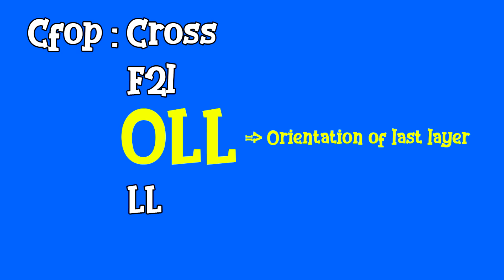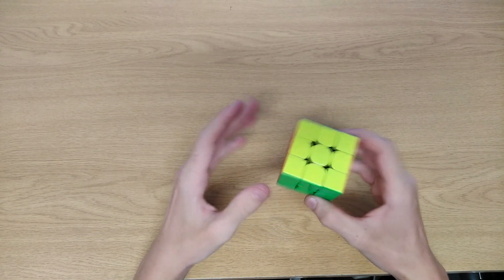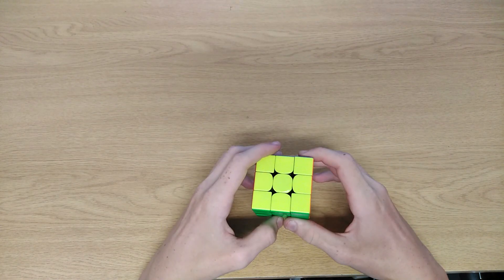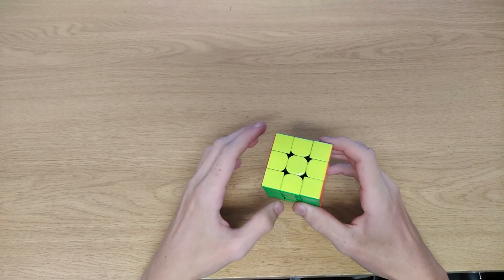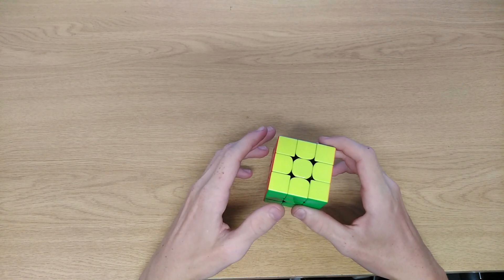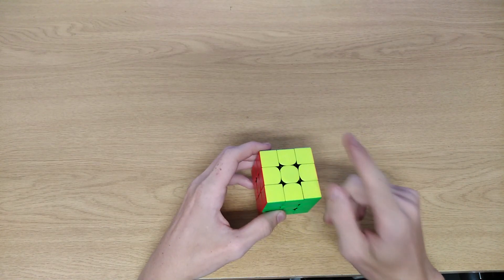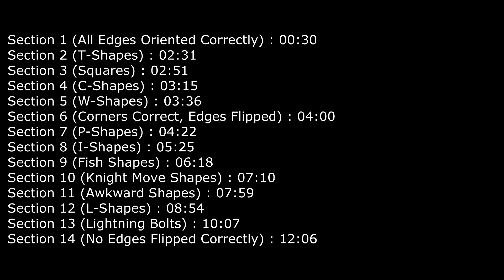OLL is the third step in the CFOP method, which stands for Orientation of the Last Layer. In basic terms, this just means that you have to make the top side the same color. There are a total of 57 algorithms in OLL, but if you first just want to learn beginner OLL, then just watch section 1. Here are all the times for each section, and there will also be timestamps in the description so that you can follow easily.